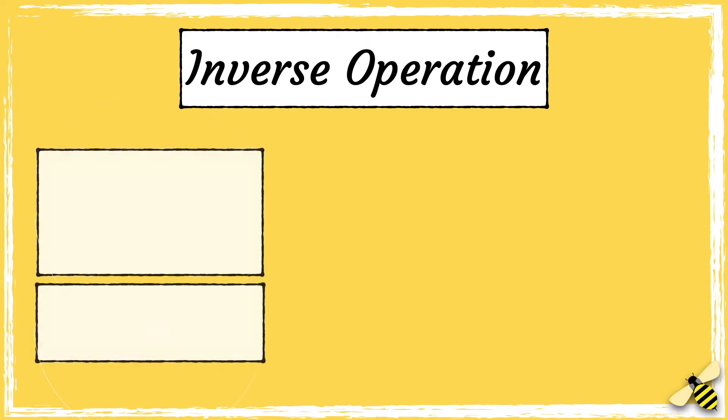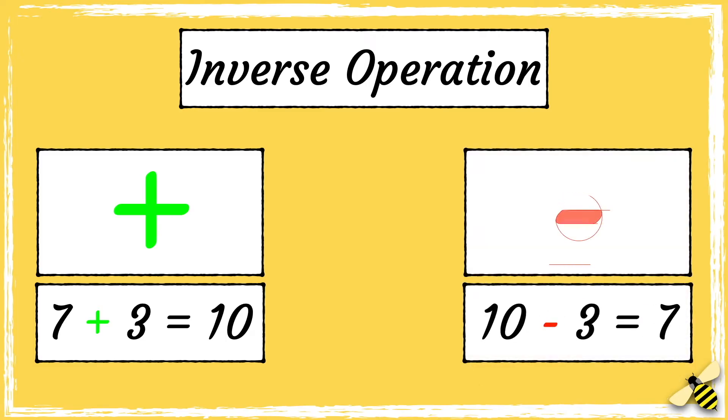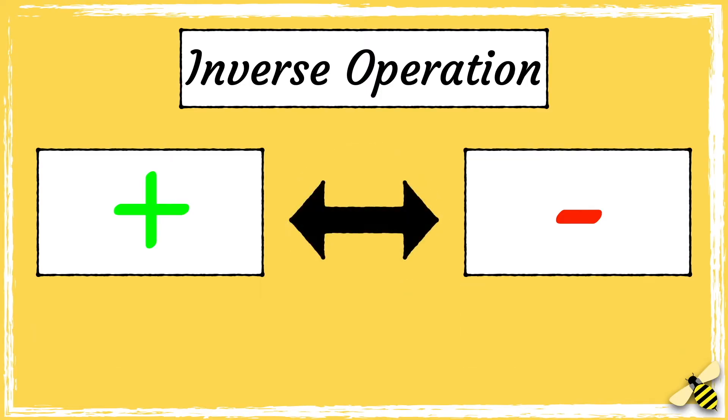So if you had the calculation 7 add 3 equals 10, you could reverse the calculation and say 10 take away 3 equals 7. The inverse of add is subtract and the inverse of subtract is add.